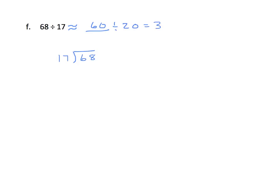Our estimate was 3 for the quotient, so we'll try that 3. Now we'll multiply, 3 times 17, and we get 51. We'll subtract and we get 17.